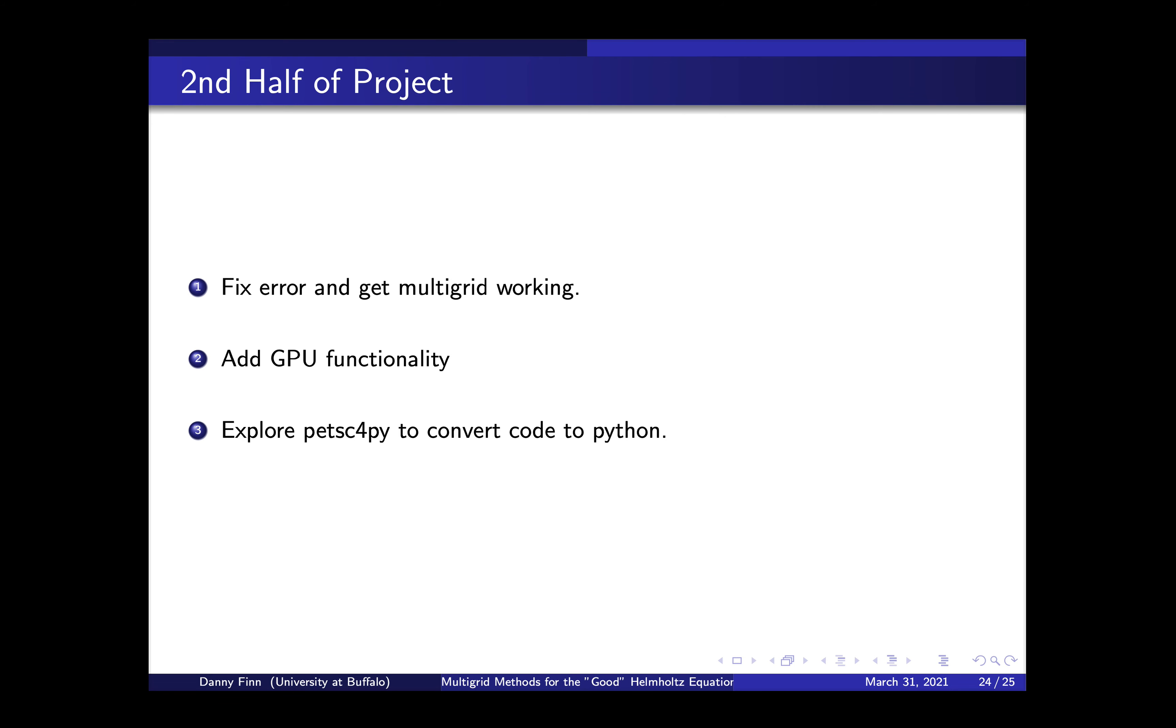And then the second half of the semester will be, like I said, I got to fix that multigrid error and then it'll be fully working for CPUs. And then I want to add GPU functionality and compare the GPU to CPU on the Jetson to see which one might be faster. And the last thing I want to do is I want to explore this PETSc for Py. So most PETSc code is written in C, which is what my current code is written in. But there is functionality for Python. So I'd like to see if I can maybe rewrite it in Python and that would be a little bit easier for everyone to see what's going on. But that's sort of the last kind of stage of once it's all functional, then we can see if we can make it prettier for everyone. So that's where we're at right now and where we're going.